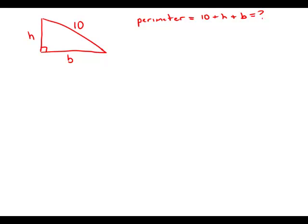The hypotenuse of a right triangle is 10 centimeters. What is the perimeter in centimeters of the triangle?